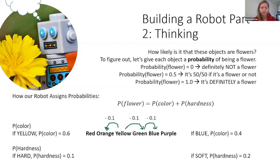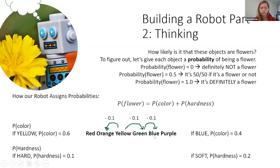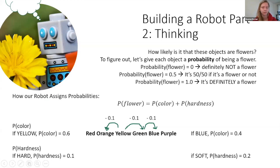If the color of the object is yellow, the probability for color is 0.6 — that's the highest you can get just from color. From there, you subtract from your probability based on how far away you go from yellow on the rainbow. Going from yellow to orange, subtract 0.1; yellow to green, subtract 0.1 — it adds up with distance. If the object is blue, we're two steps away, so 0.6 minus 0.2 gives 0.4. For hardness: soft gives a probability contribution of 0.2, and hard gives 0.1.